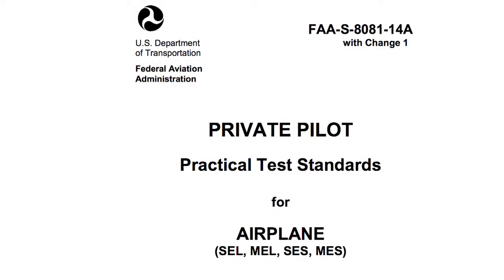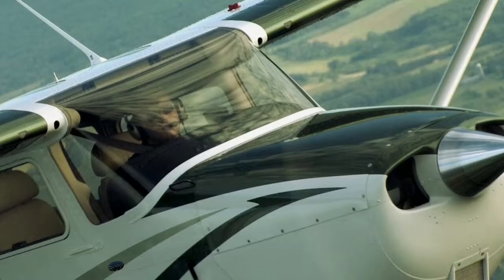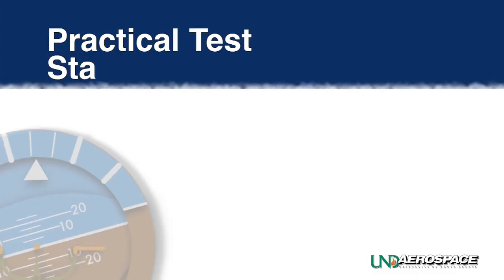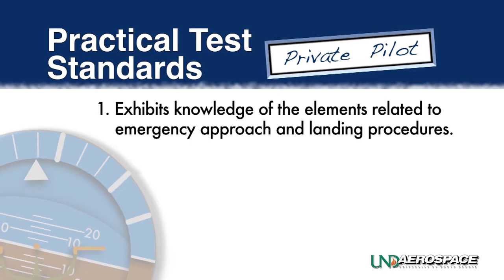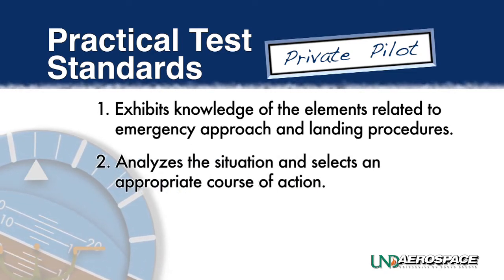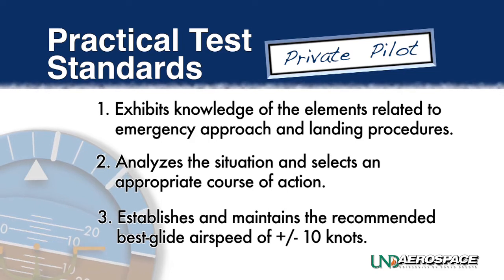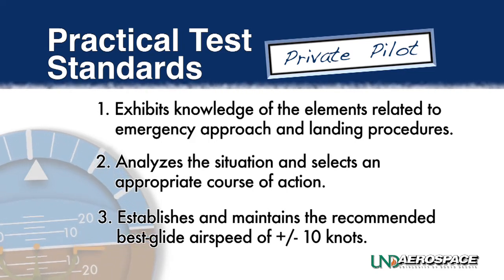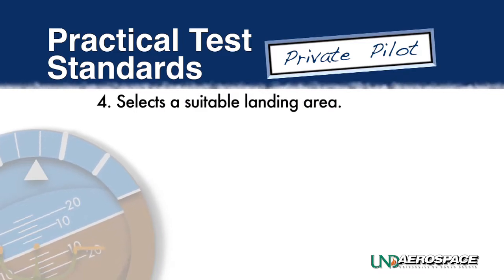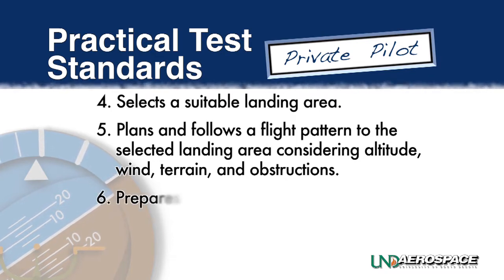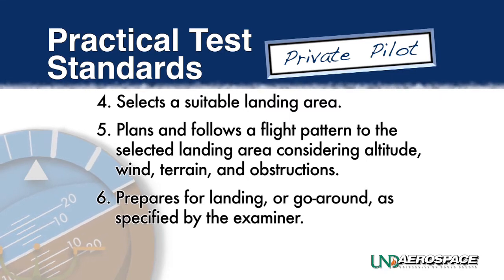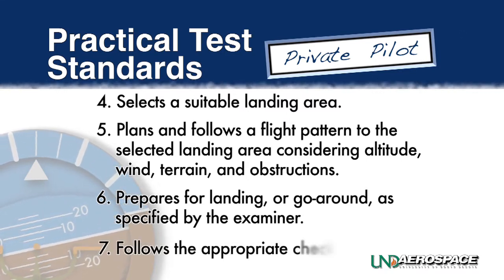The FAA's Private Pilot Practical Test Standards Booklet prescribes several standards that must be met by the private pilot candidate before this maneuver can be considered satisfactory on an FAA checkride. Prior to taking the checkride, the pilot must verify that he or she exhibits knowledge of the elements related to emergency approach and landing procedures, analyzes the situation and selects an appropriate course of action, establishes and maintains the recommended best glide airspeed within plus or minus 10 knots, selects a suitable landing area, plans and follows a flight pattern to the selected landing area considering altitude, wind, terrain and obstructions, prepares for landing or go-around as specified by the examiner, and follows the appropriate checklist.